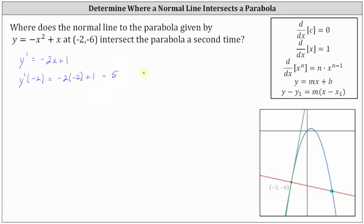So now we know m equals five is the slope of the tangent line at the point negative two comma negative six, which means the slope of the normal line is going to be the negative reciprocal of five. Five is equal to five over one, and the negative reciprocal of five over one is negative one fifth. So m equals negative one fifth is the slope of the normal line at the point negative two comma negative six.